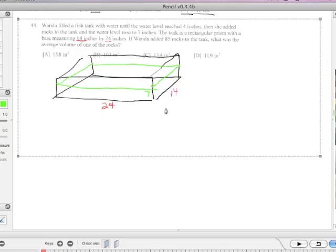So what was the volume of the tank before she added the rocks and then what's it with the rocks? And we're going to take the difference between those two. The volume here would be straightforward, 24 times 14 times 7. Wait, I messed that up. It was 4 inches when she put the water in first. So this is the 4 inches. Then it rose to 7 inches. So how much did it go up?